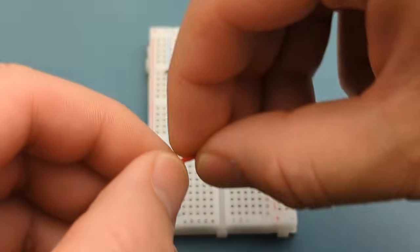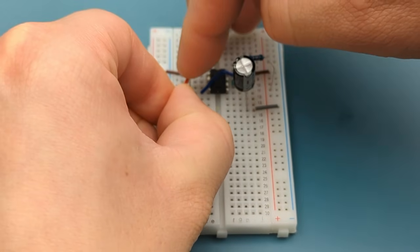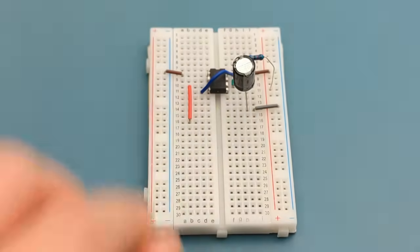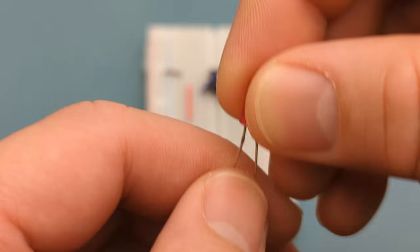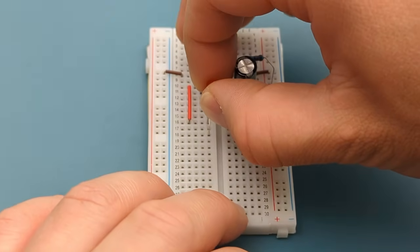Insert a jumper wire into pin 3 or output and a few rows below the 555 timer. Place one leg of the LED into the same row as the jumper wire and insert the other leg a few rows beneath it. Insert the longer leg in the same row as the jumper wire.